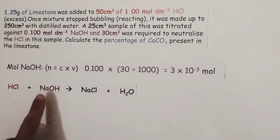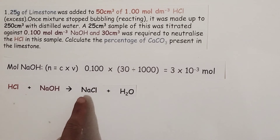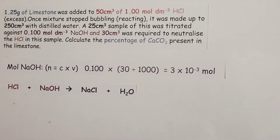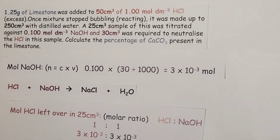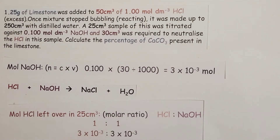We have hydrochloric acid reacting with sodium hydroxide in a one-to-one ratio to form sodium chloride and water. So if we know it's a one-to-one ratio, we therefore know how many moles of hydrochloric acid are present in those 25 centimetre cubed samples — it must also be 3 × 10⁻³ moles of hydrochloric acid in our titration.